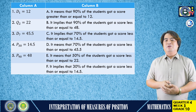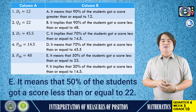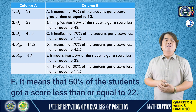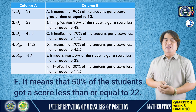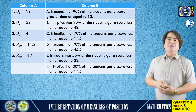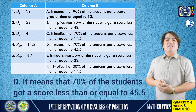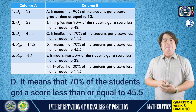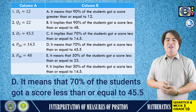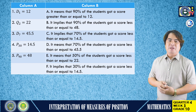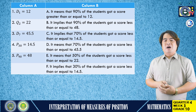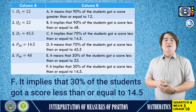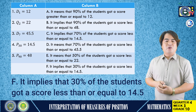For number 2, the answer is letter E — it means that 50% of the students got a score less than or equal to 22. For number 3, the answer is letter D — 70% of students got a score less than or equal to 45.5. For number 4, the answer is letter F — it implies that 30% of students got a score less than or equal to 14.5.